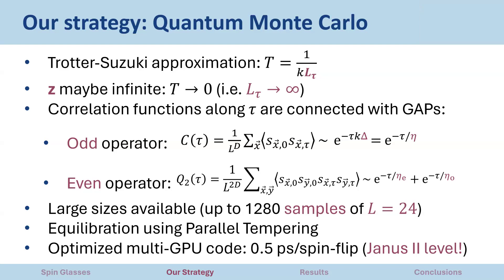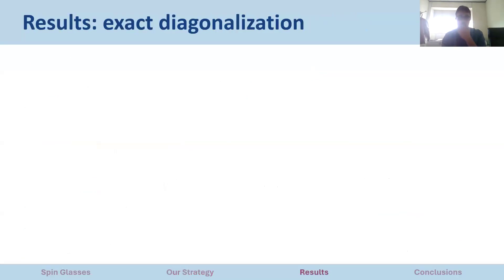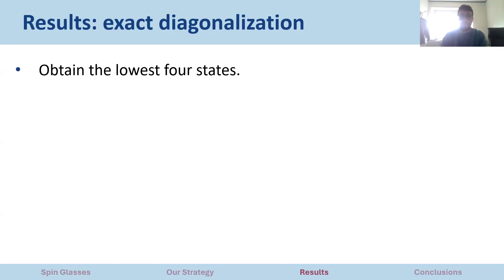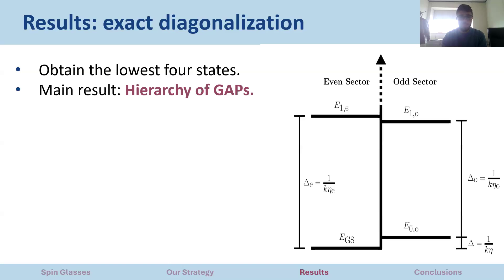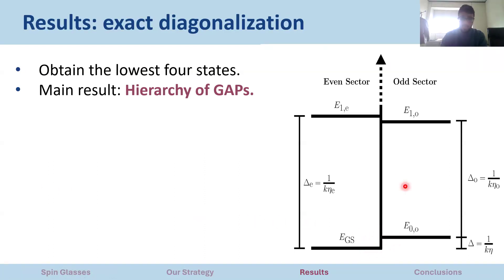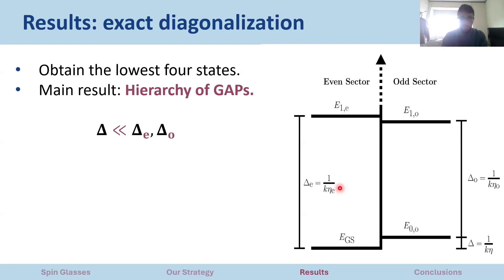Let's start with the exact diagonalization results. We obtained the lowest four states in terms of energy, and from them we extracted the energy gaps. We notice a hierarchy of gaps: the energy gap associated with different-parity states is really small compared to the energy gap within the same parity sector. When we move to the idea of correlation length, we obtain the opposite relation.